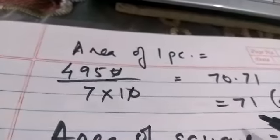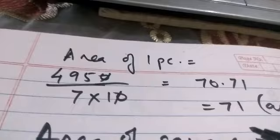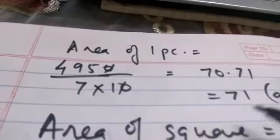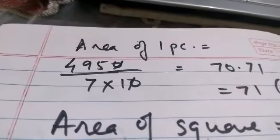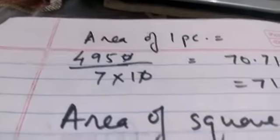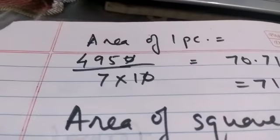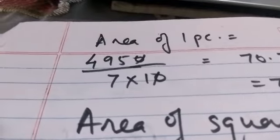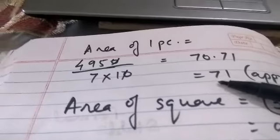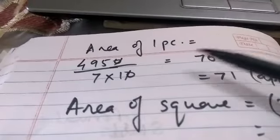That means one slice of circular pizza is equal to this much. So this is coming out to be the area of one slice of circular pizza, area of one piece.